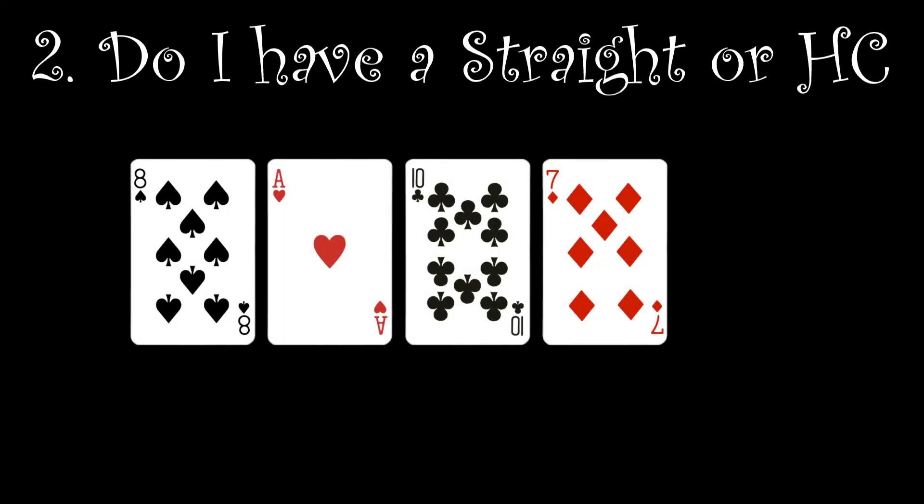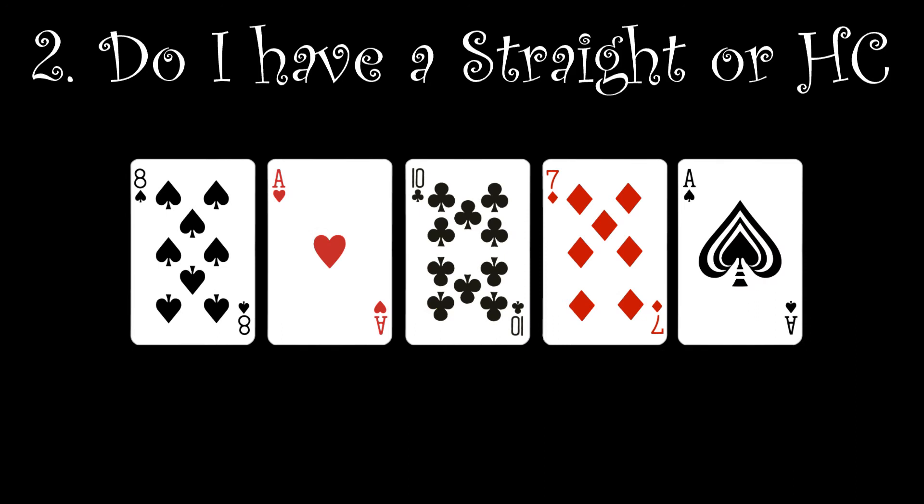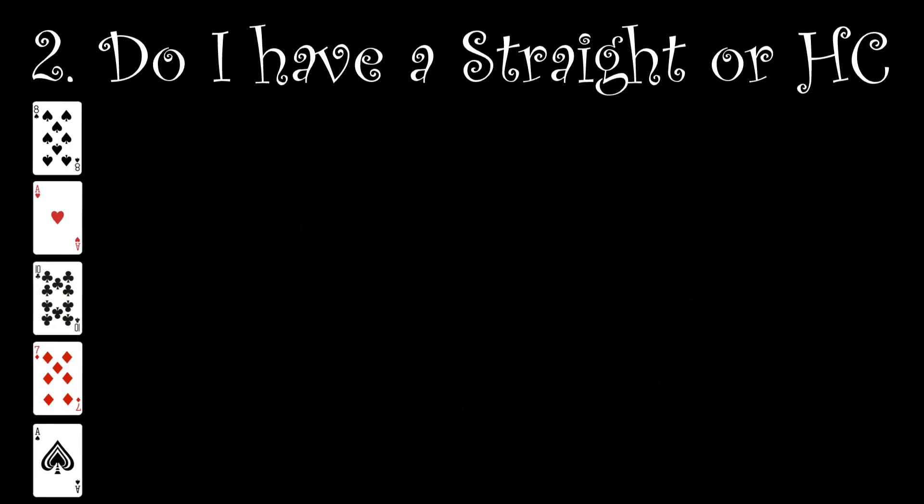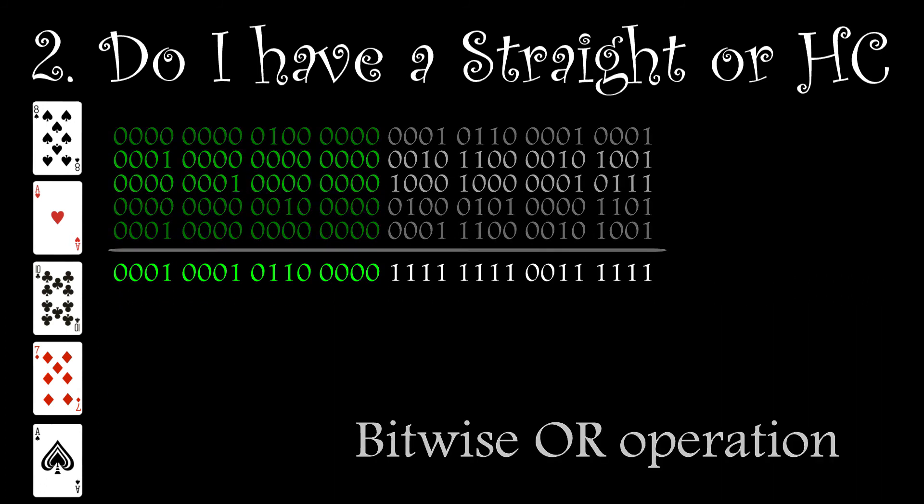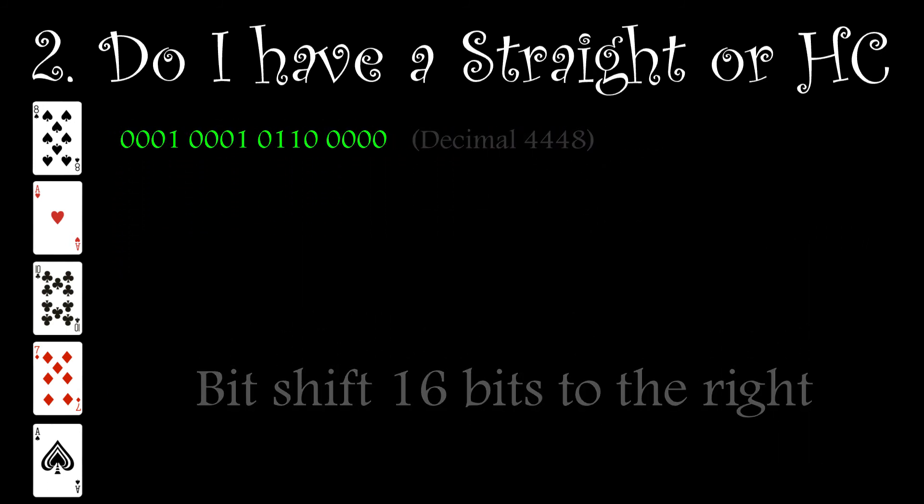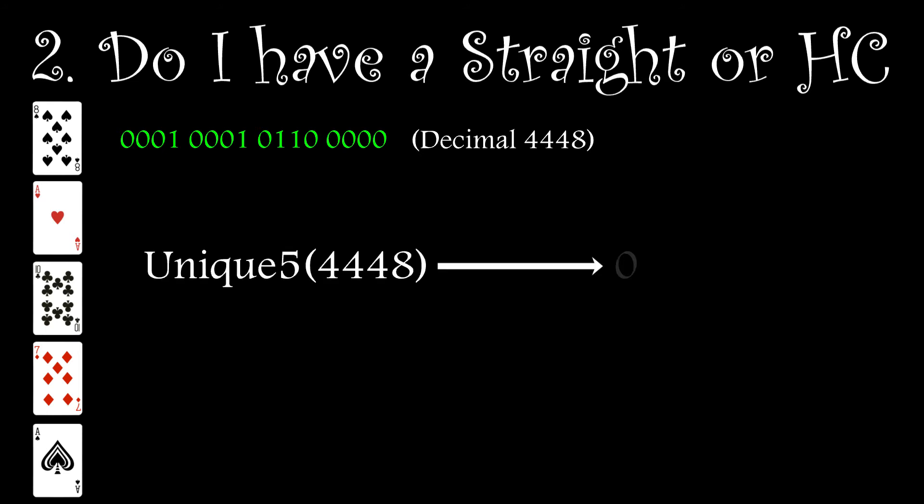Swapping the nine with an ace gives us a final example. Clearly this should fail to find a hand ranking as it doesn't meet the criteria. Extracting the lookup ref from the hand and checking it against the Unique 5 table, we get a zero returned. So it has failed and we must now move on to the final question to get its correct hand ranking.